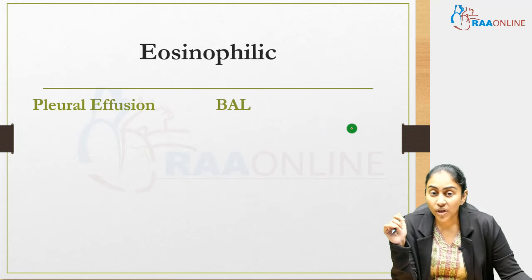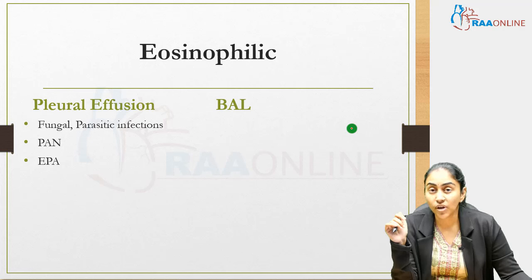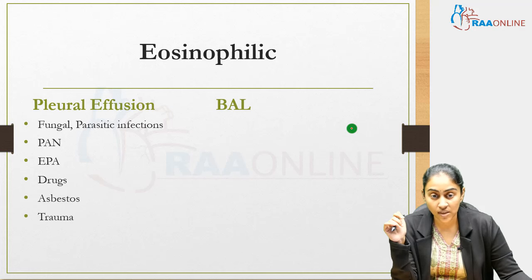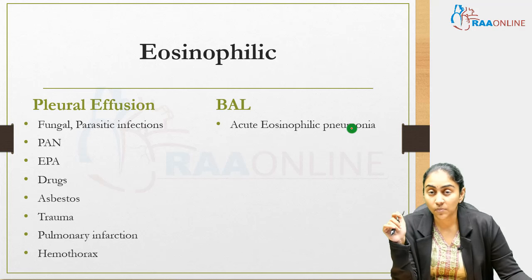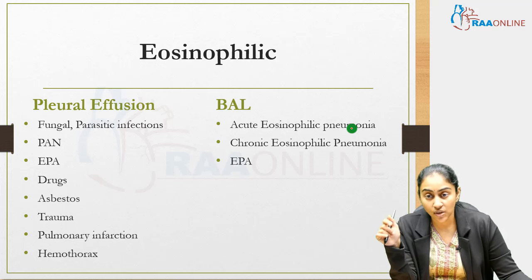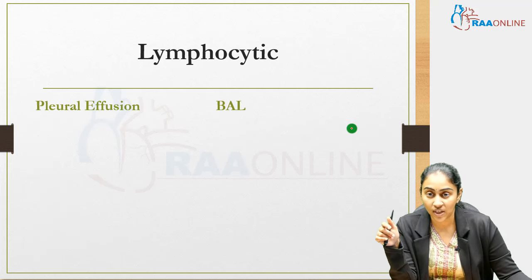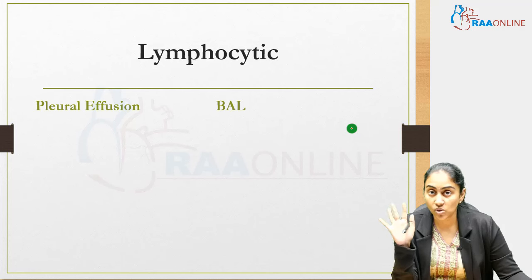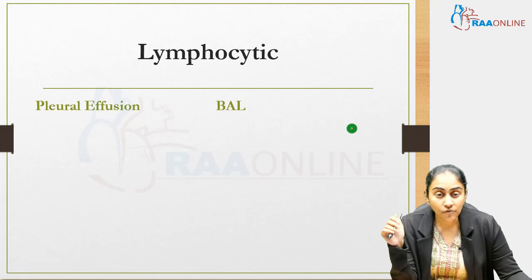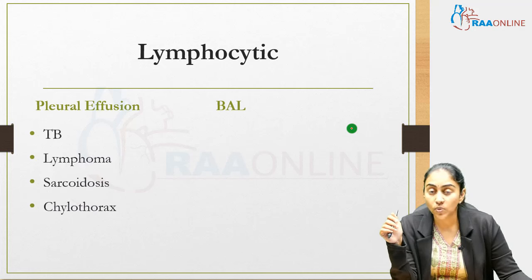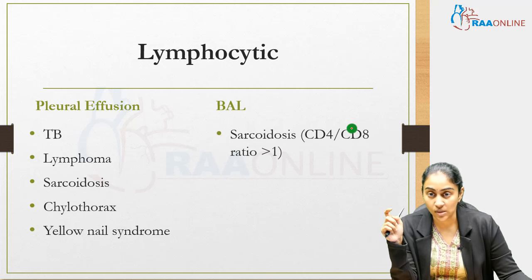Eosinophilic pleural effusion can be seen in fungal or parasitic infections, polyarteritis nodosa, eosinophilic granulomatosis with polyangiitis, drugs, asbestos, trauma, pulmonary infarction, and haemothorax. Eosinophilic BAL is seen in acute eosinophilic pneumonia, chronic eosinophilic pneumonia, and eosinophilic polyangiitis. Lymphocytic pleural effusion is seen in TB, lymphomas, sarcoidosis, chylothorax, and yellow nail syndrome.